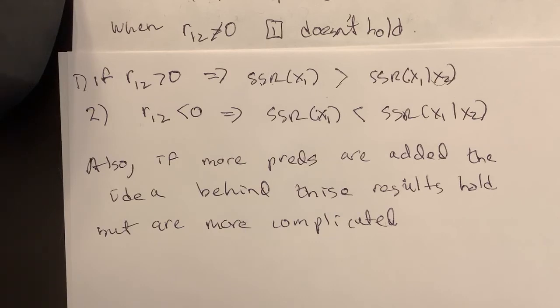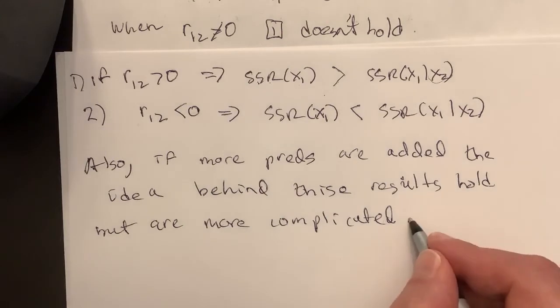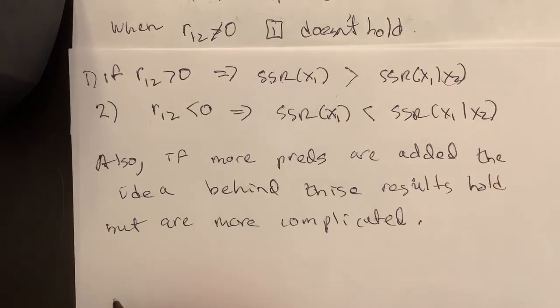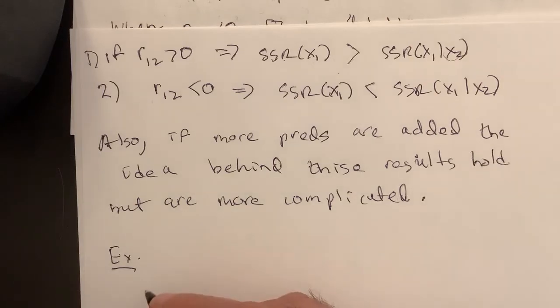Now, what's an example, a real world example where predictors are correlated? Here's an example. I think this is what they use in the book. You could think of lots of them. So one is, say we have an example.